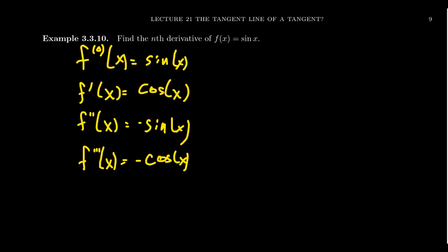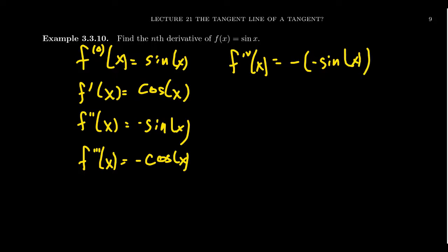If we keep on going, we see that the fourth derivative — we're going to keep on going for a while because we're looking for the nth derivative. We want to find a general pattern here. If we take the fourth derivative of sine, that is the derivative of negative cosine. Taking that negative sign out in front, we're going to get negative times the derivative of cosine, which is negative sine. But as that's now a double negative, we see that the fourth derivative is going to be sine of x.